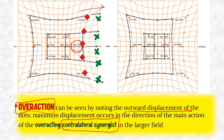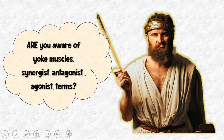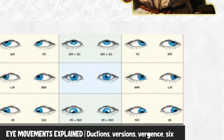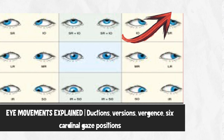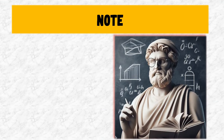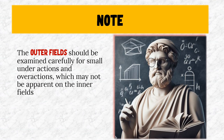Understanding yoke muscles, synergists, antagonists, and agonists is essential before interpreting the Hess chart. A reference video link is provided for clarification. Always examine all points — both inner and outer fields. The outer field is important and should be examined carefully for small under-actions and over-actions that may not be apparent on the inner fields.